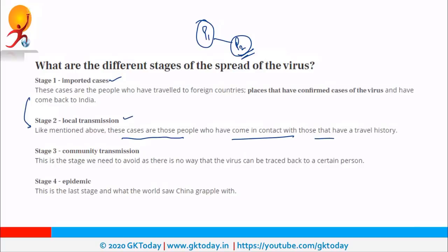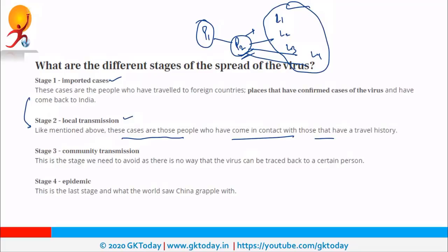The third and most dangerous stage is community transmission. P2, who has no travel history, starts interacting with other locals like L1, L2, L3, and L4. This is something very serious — locals who never visited any other country also become vulnerable to this virus. This is the stage we are trying to avoid.